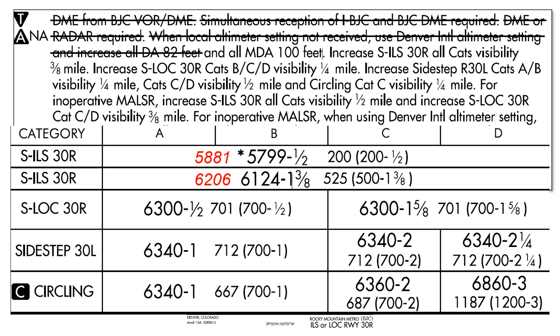Next, the MDAs will have to come up if we're using the Denver International altimeter by 100 feet, so all those go up. Now, the visibilities: the ILS visibilities go up an additional three-eighths of a mile. The visibilities for the non-precision localizer approach, sidestep, and circling only also go up as prescribed in the note.